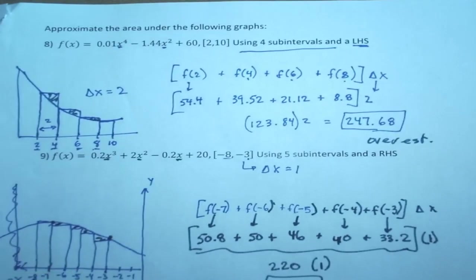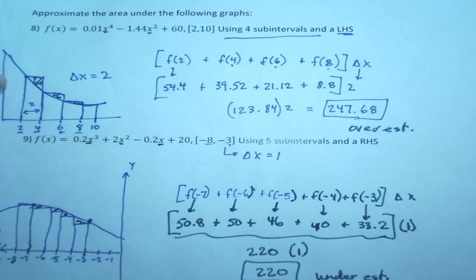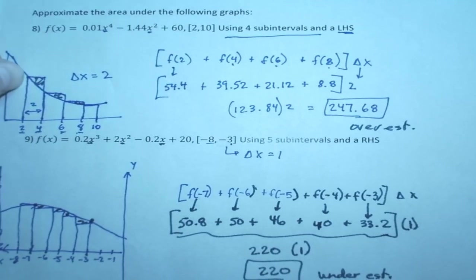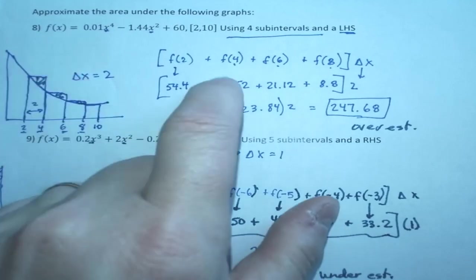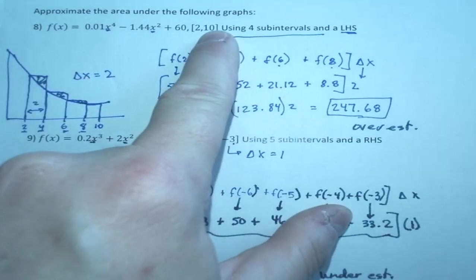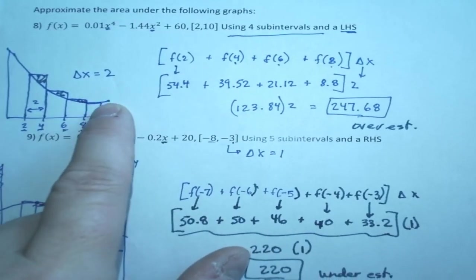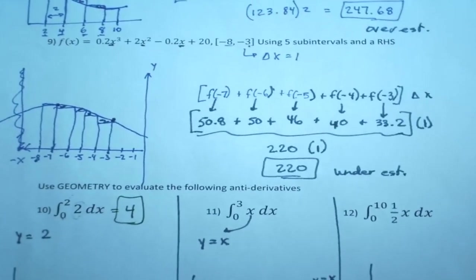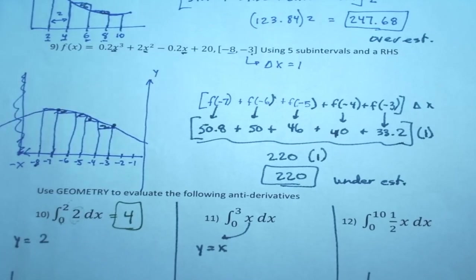The hardest thing here is just remembering for a left-hand sum, if you draw the picture, your function values will be those left corners. And a lot of people, they'll throw an f of 10 into this problem, but you're using the left-hand corner, not the right-hand corner. Same thing here. This is a right-hand sum. Someone will want to give me f of negative 8, but that's a left-hand corner. We don't use the left-hand corner with a right-hand sum. So I hope that's clear. I hope that helps. And if you have any questions, let me know. Thank you.